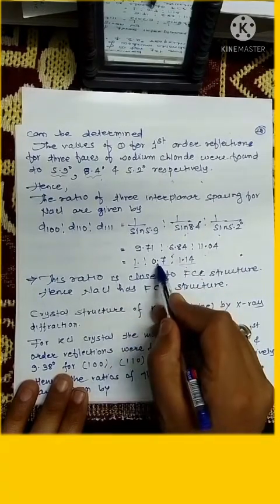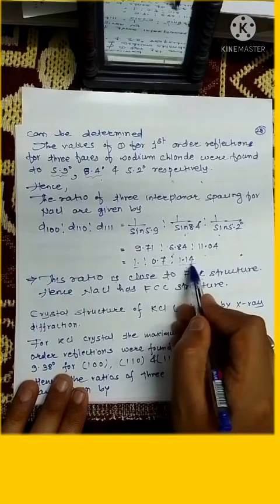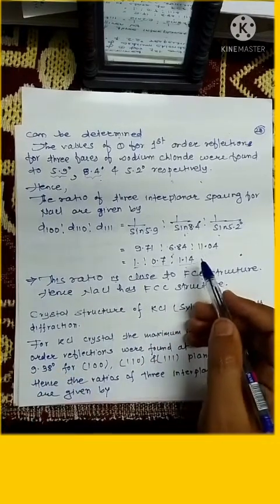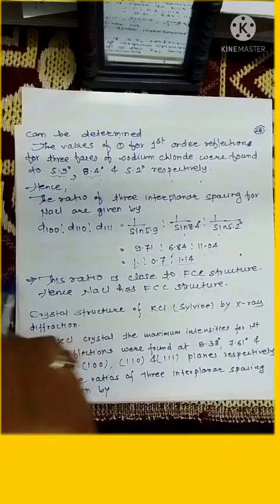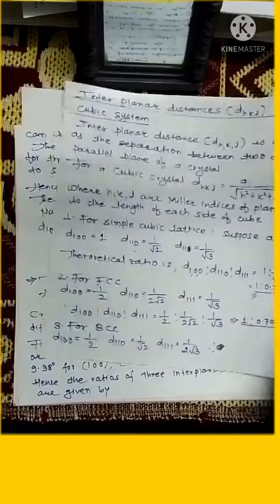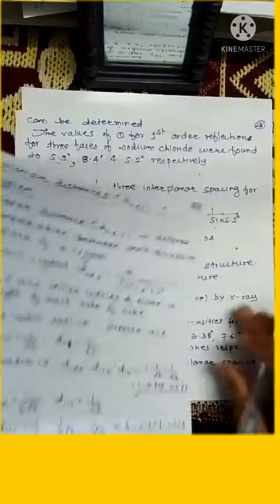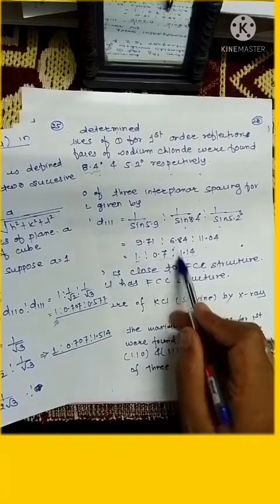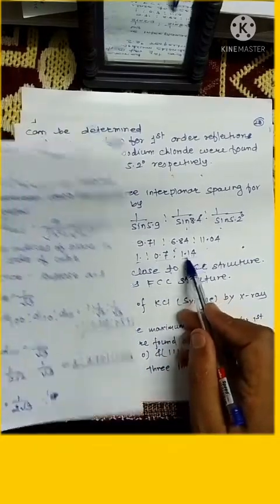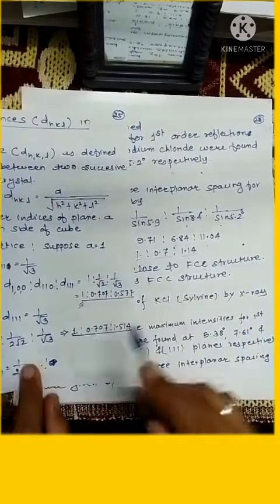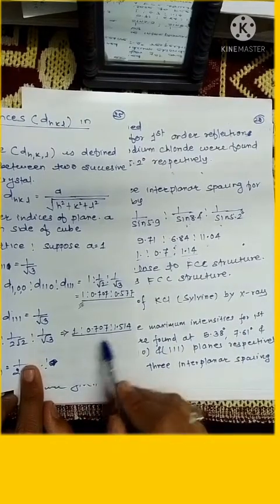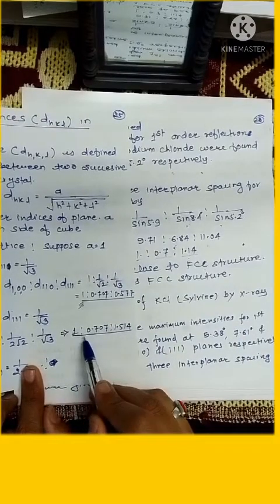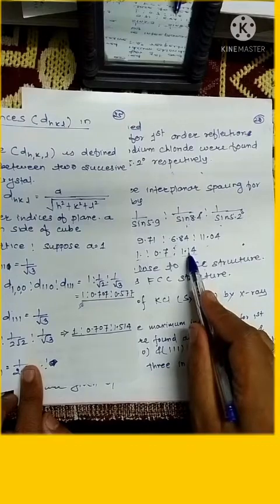When we put that value into this and solve this, we come with experimental ratio that is 1 : 0.7 : 1.14. Now we compare these values with our theoretical ratio. So just see here, this 1 : 0.7 : 1.14 is near to your FCC values. So from here we can say that your NaCl is FCC type crystal structure.